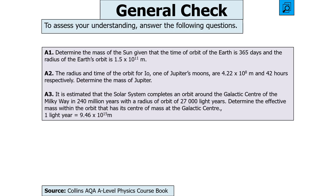The next question says: determine the mass of the Sun given Earth's orbital period is 365 days and orbital radius 1.5 × 10¹¹ m; then Io has orbital radius 4.22 × 10⁸ m and period 42 hours — determine Jupiter's mass; then the solar system orbits the galactic centre every 250 million years with radius 27,000 light years (1 light year = 9.46 × 10¹⁵ m) — determine the effective mass within that orbit. Pause the video now.